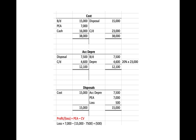For accumulated depreciation, the brought forward was given to you. You need to remove that balance and also input the depreciation charge for the new van, which is 20% straight line times $23,000 as the cost. For the disposals account, you have the cost and accumulated depreciation of the disposed asset, plus the PEA, and the balancing figure is the loss on disposal.